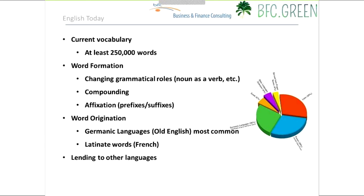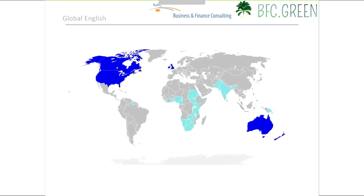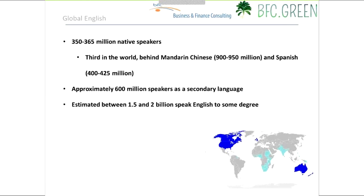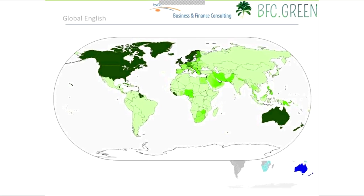English is now a truly global language. It is a primary or secondary language in a large portion of the world. English has 350–365 million native speakers — third in the world behind Mandarin Chinese and Spanish. But including secondary speakers, there are nearly 1 billion total English speakers, and if you include those who speak it to some degree, estimates range from 1.5 to 2 billion people. If you know English, you can travel almost anywhere in the world and be understood by someone.